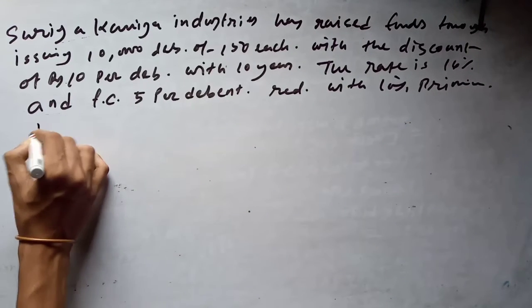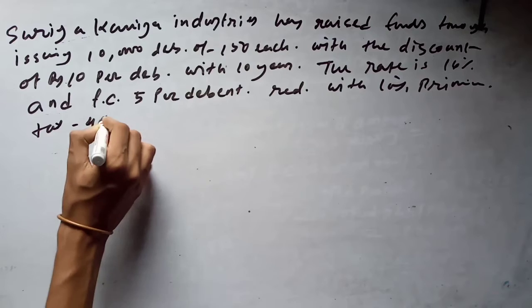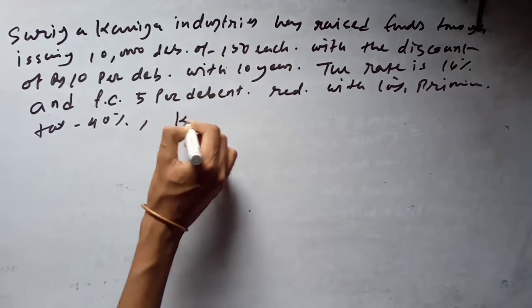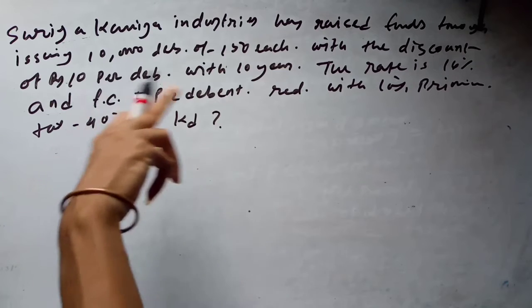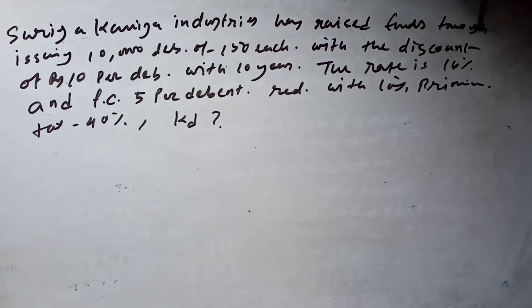The tax is 40%. We need to calculate the cost of debt. The Surya Kanaiya Industries has raised funds through issuing 10,000 debentures of 150 each with the discount of 10 per debt with the limitation of 10 years.